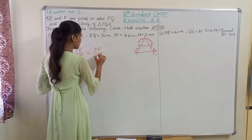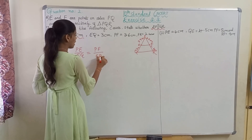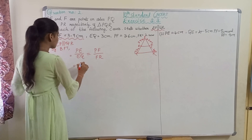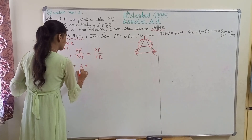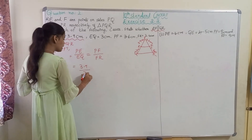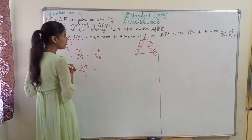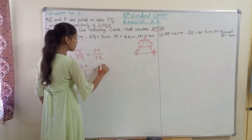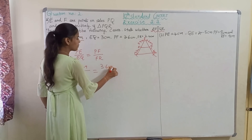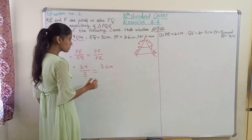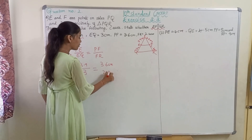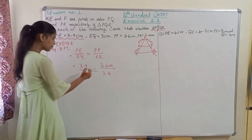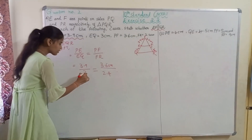PF upon FR. So let us write now. PE is 3.9 cm and EQ is 3.6 cm — that will be equal to PF, which is 3.6 cm, upon FR, which is 2.4 cm. So now let us simplify this — we can reduce here.